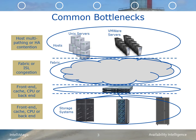Bottlenecks can occur at any layer of the IT infrastructure, from the host, through the fabric, to the SVC, and then on the backend storage system. Bottlenecks at any of these layers can impact hosts and host I/O performance. Common bottlenecks on the host include multipathing or host adapter port contention. Within the fabric, it's very common to have ISL congestion. At the SVC layer, it's common to see front-end imbalances, cache limitations, CPU limitations, and backend response time issues.